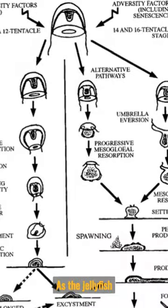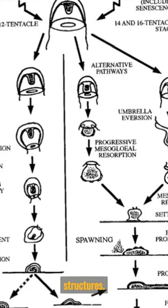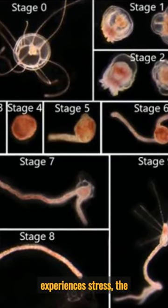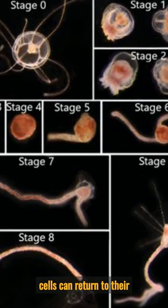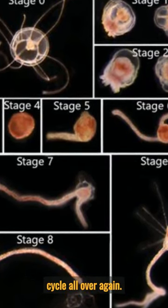As the jellyfish matures, its cells differentiate into specialized structures. But when the jellyfish experiences stress, the cells can return to their undifferentiated state, allowing the jellyfish to start its life cycle all over again.